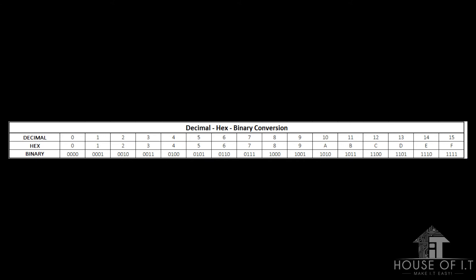As you may know, decimal notation uses 10 digits — numbers from 0 to 9. But hex uses 16 digits instead of 10. As you can see in the chart, from 0 to 9, decimal and hex use the same representations. But for numbers 10 to 15, hex uses the letters A through F to represent these values.